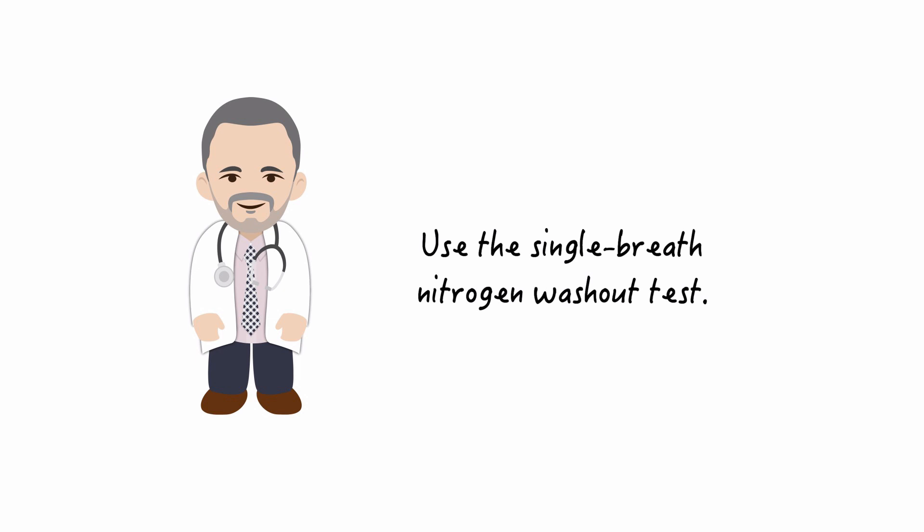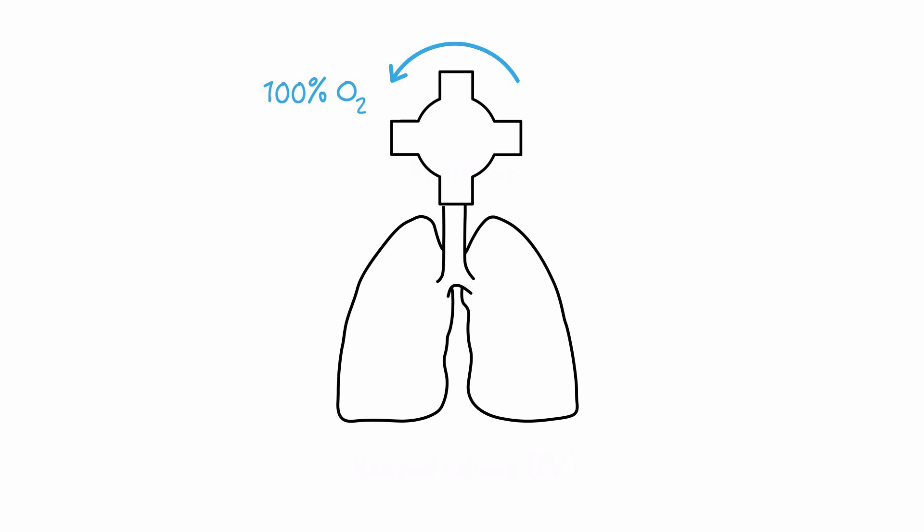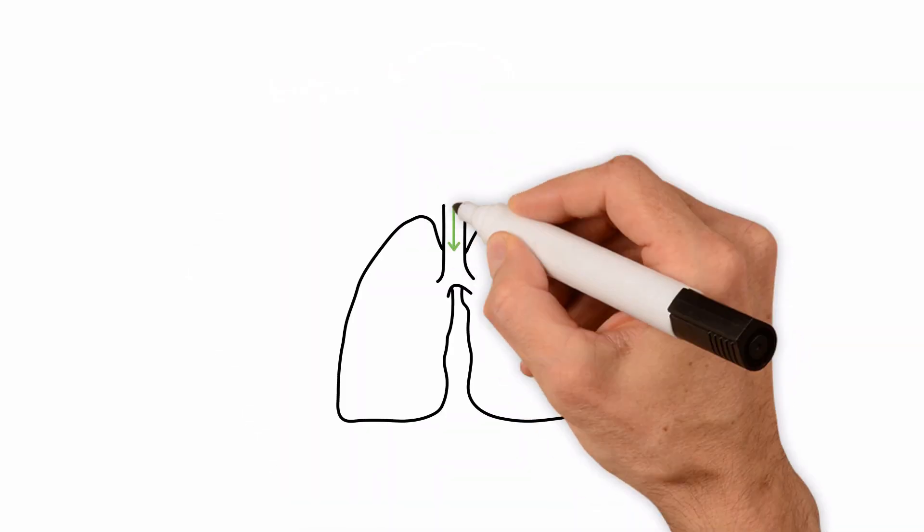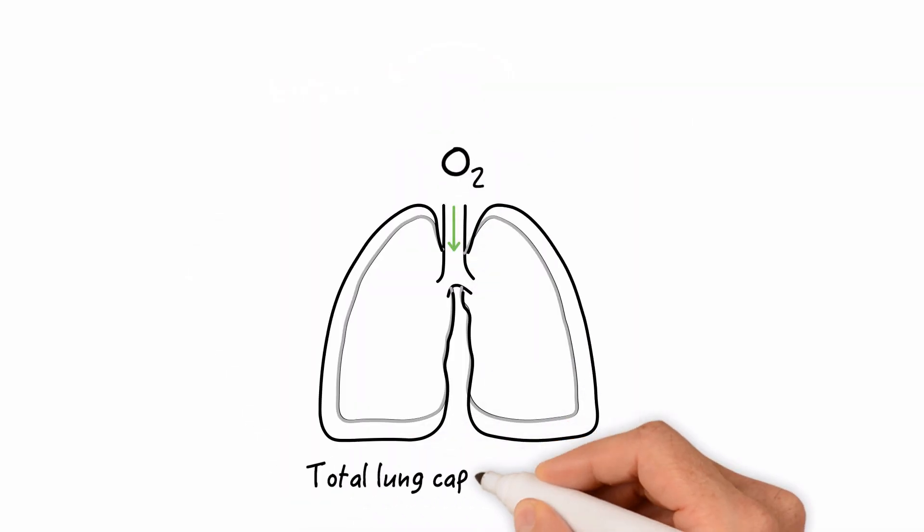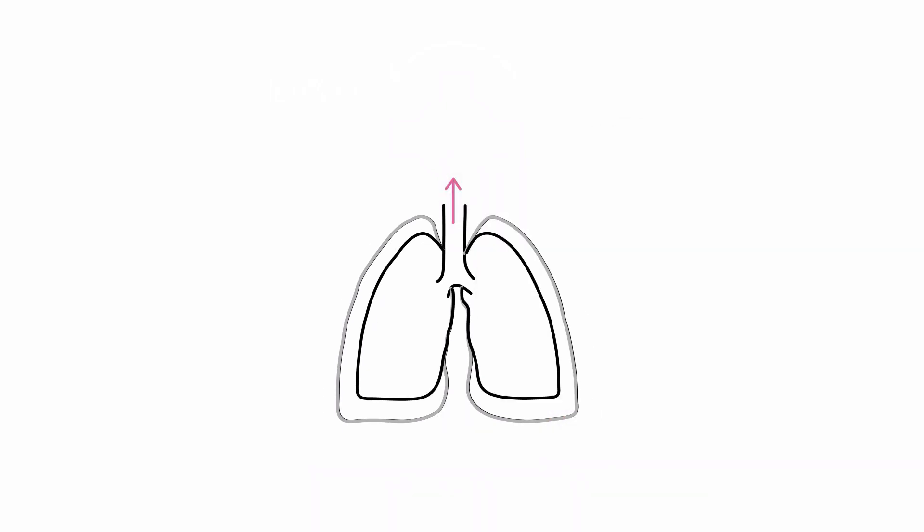The seated patient takes two breaths of air and exhales to residual volume. Then the valve on the mouthpiece is turned to administer 100% oxygen. The patient takes a deep breath of the oxygen to total lung capacity, and then exhales slowly to residual volume.